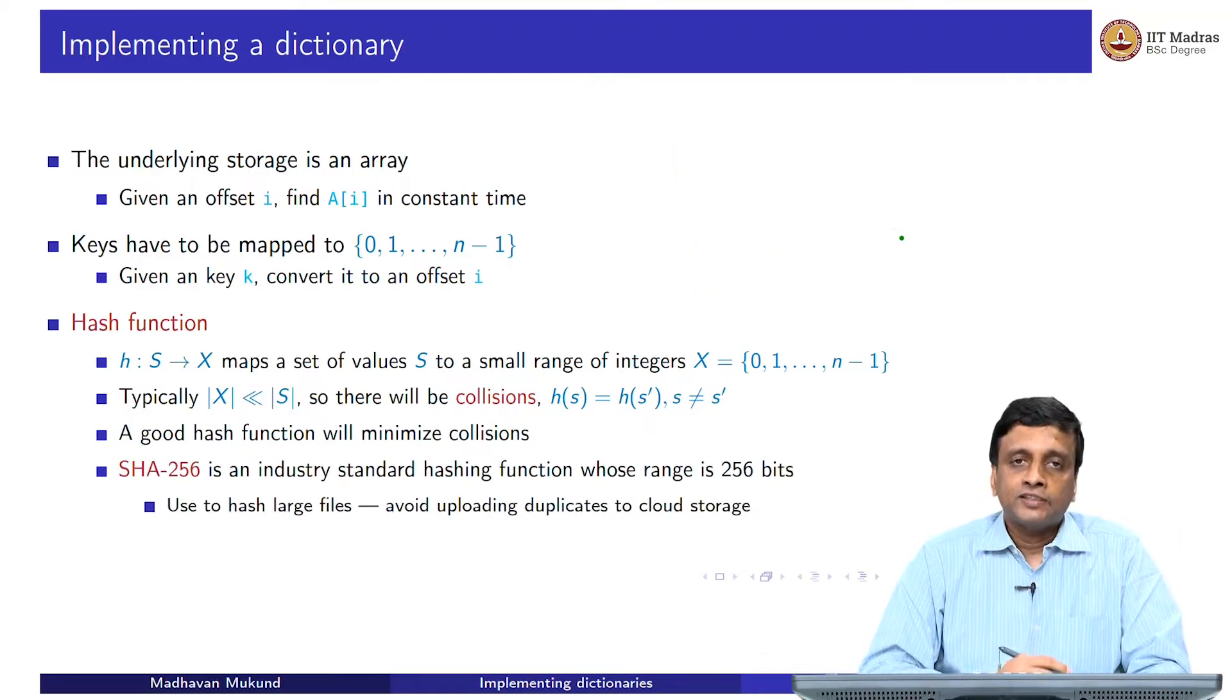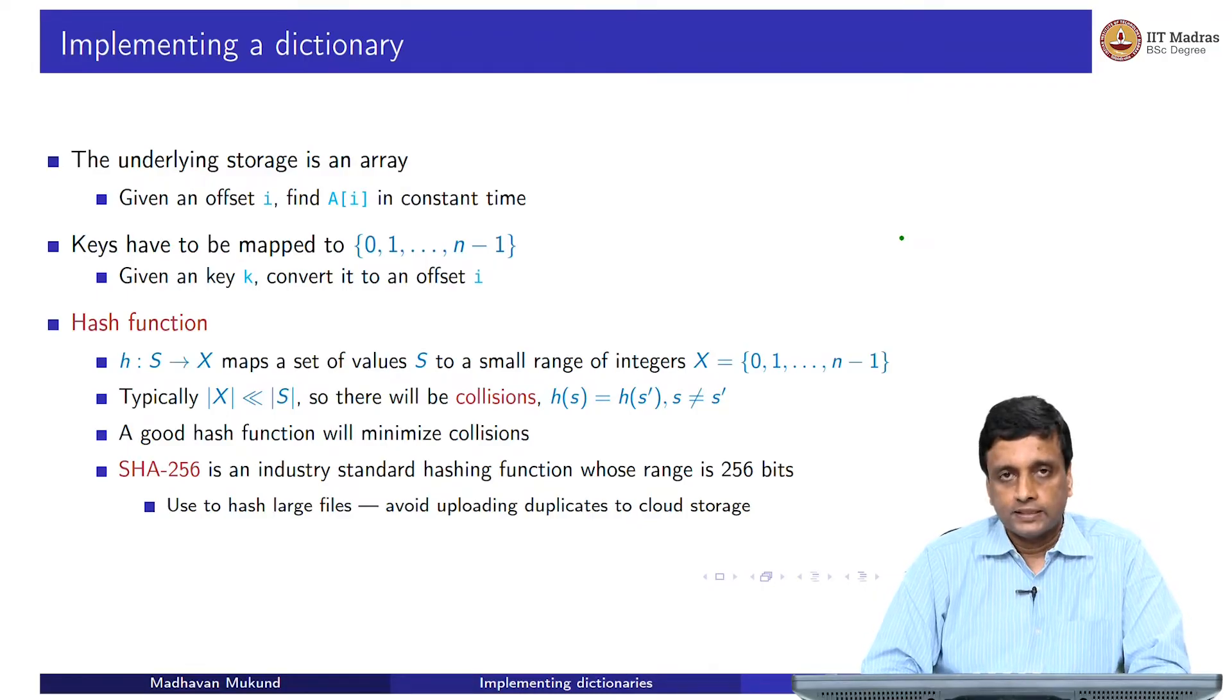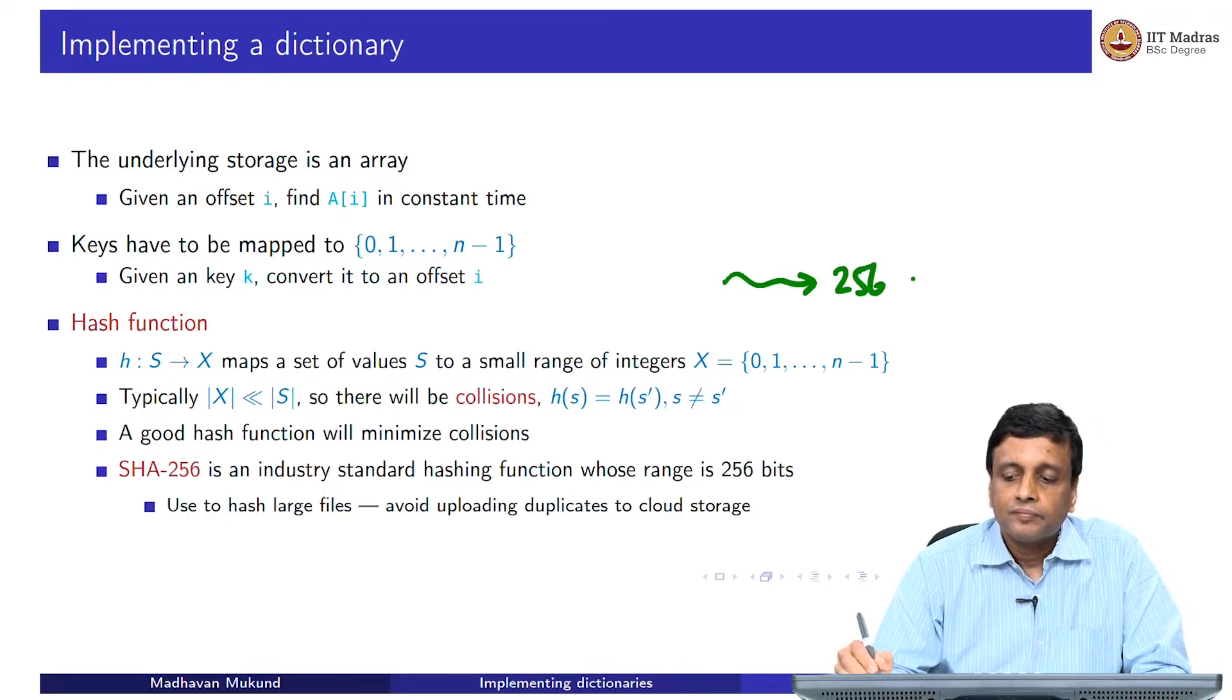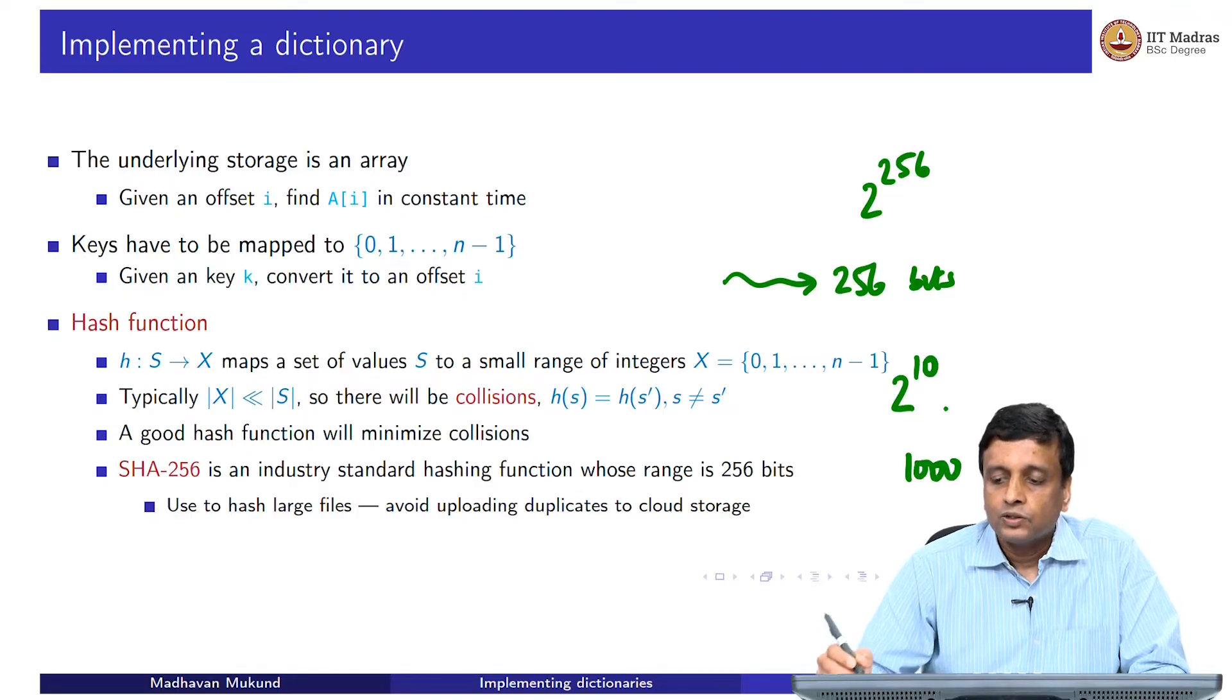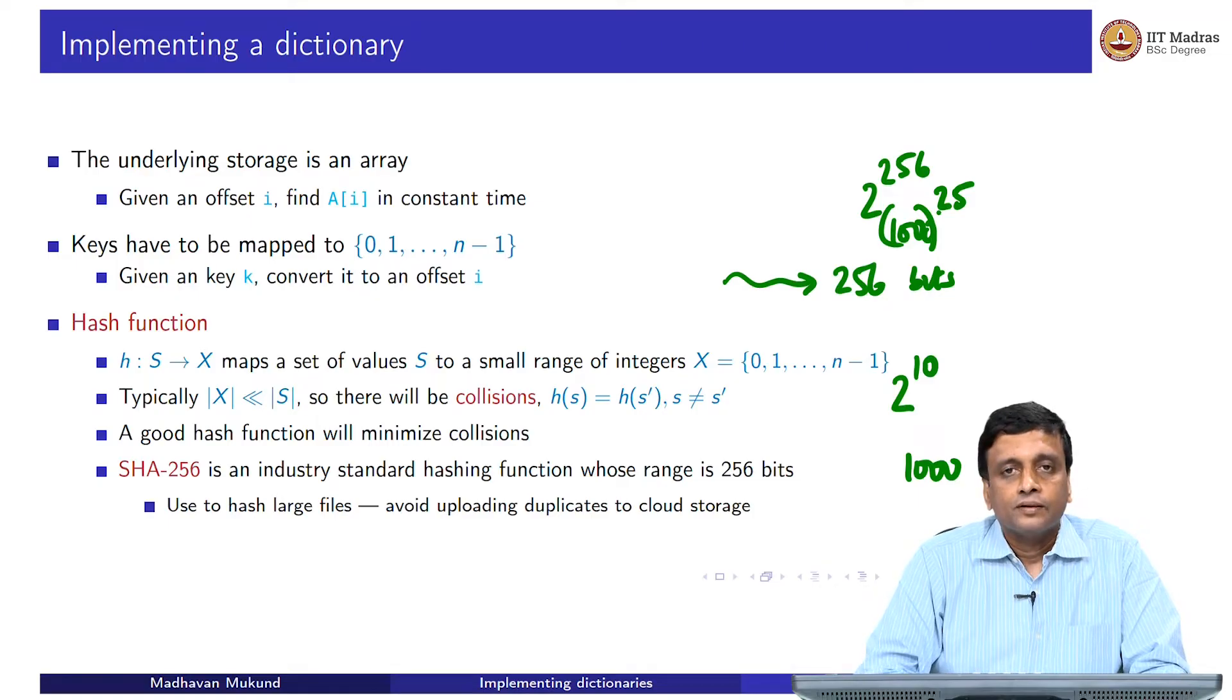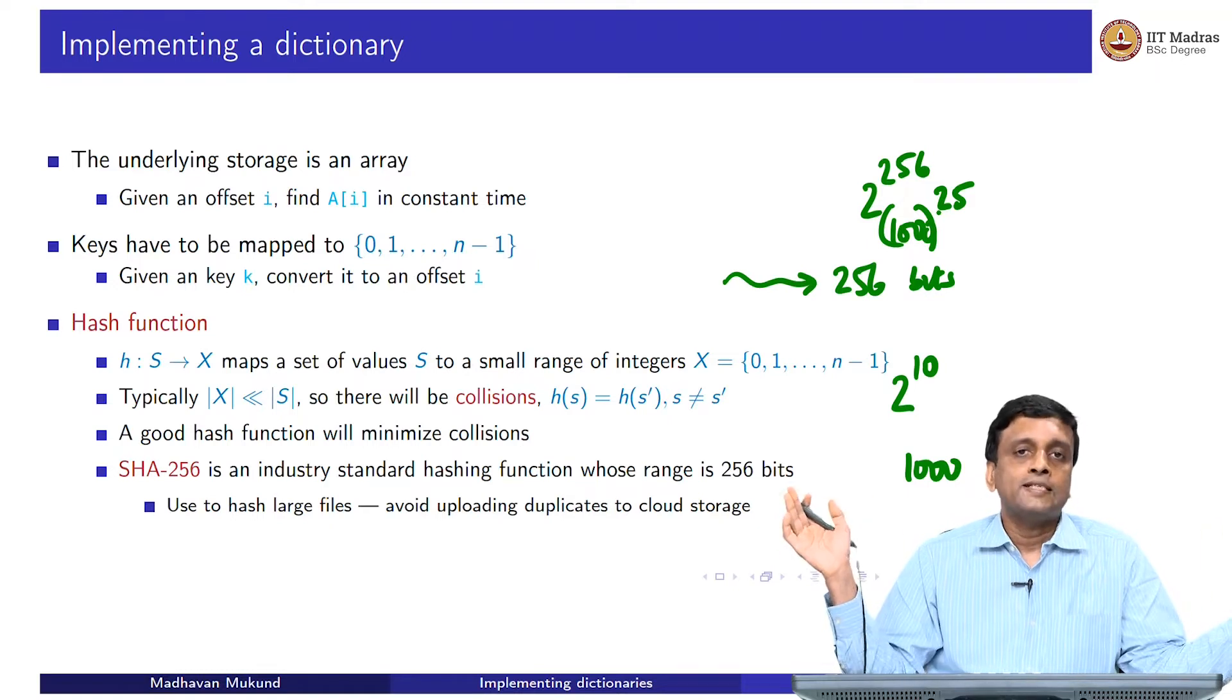Just to illustrate how important hash functions are, there is this now current industry standard called SHA-256. This is used for cryptography and other things. 256 refers to the fact that the output of this thing is 256 bits. 256 bits is a large number, 2 to the power 256. Remember that 2 to the power 10 is 1000. This is 1000 to the power 25 roughly something like that. This is like 1 with 75 zeros after this. That is the space in which you are mapping.